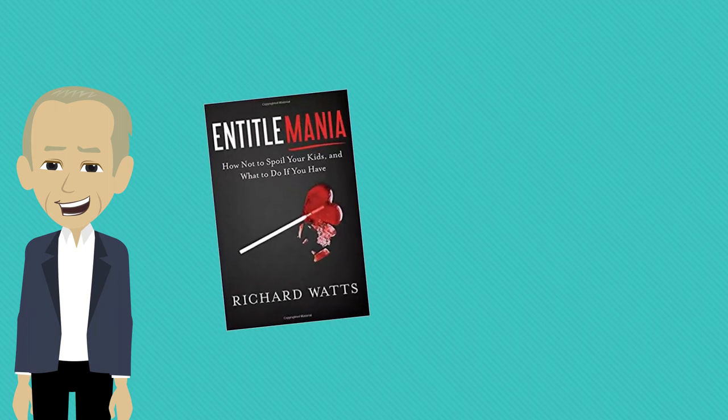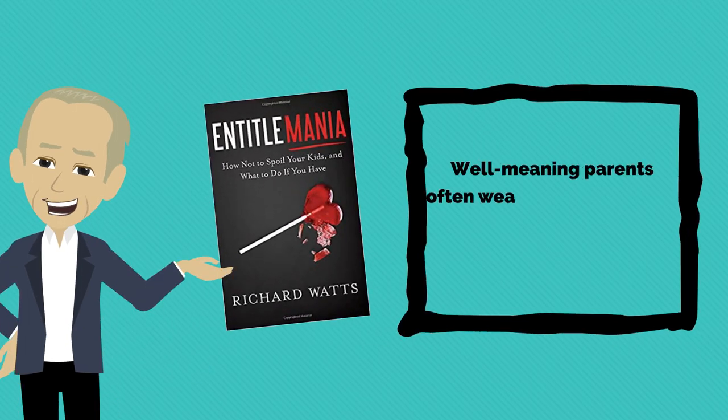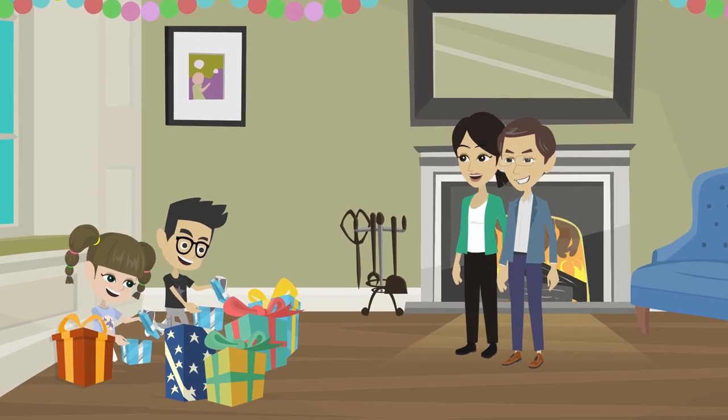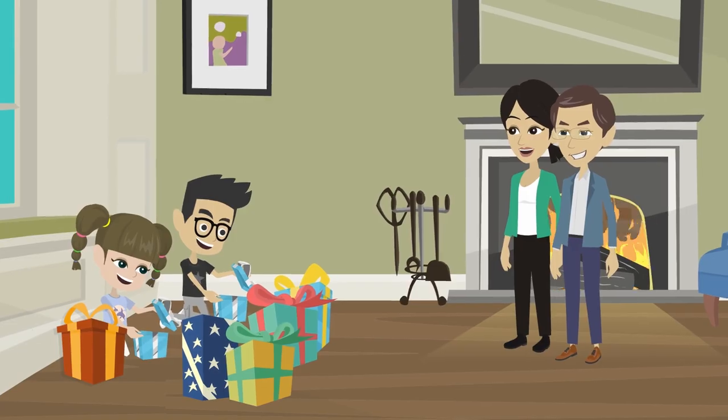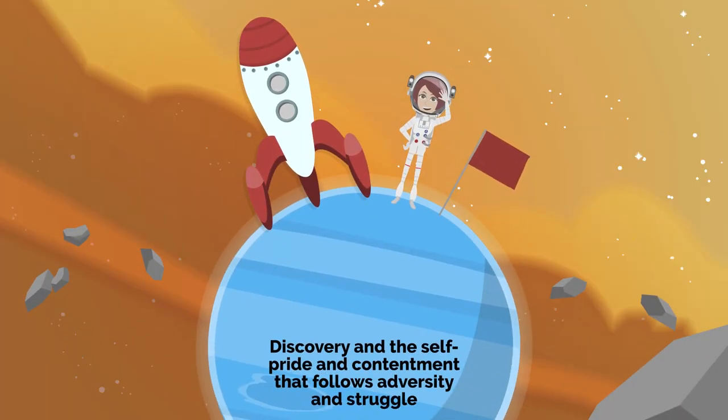Richard Watt's eye-opening book Entitle Mania looks at the ways in which well-meaning parents often weaken their children by overindulging them and overmanaging their lives. Moreover, when parents give their children too much, it often prevents them from recognizing their true aspirations. It takes away their opportunity for discovery and the self-pride and contentment that follows adversity and struggle.